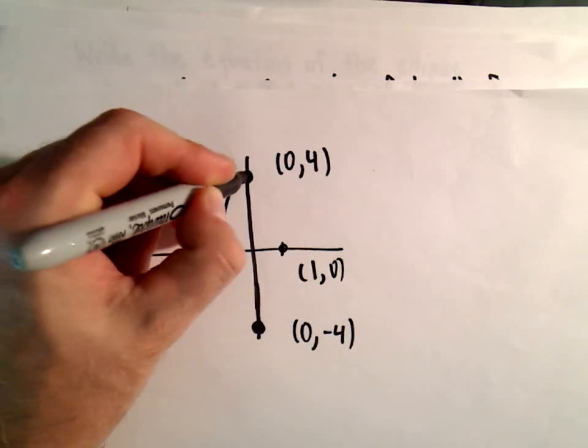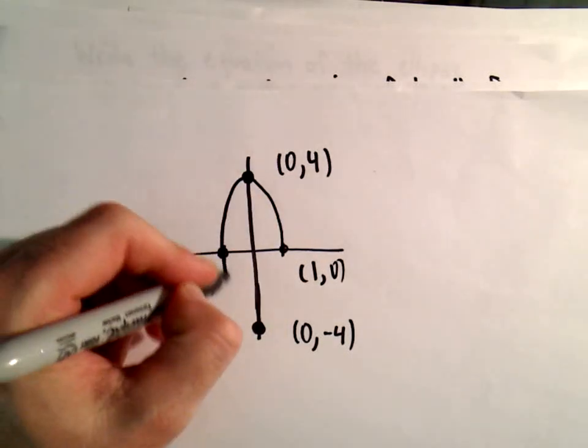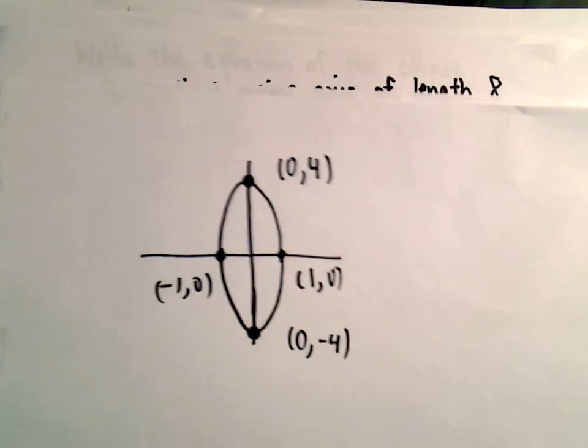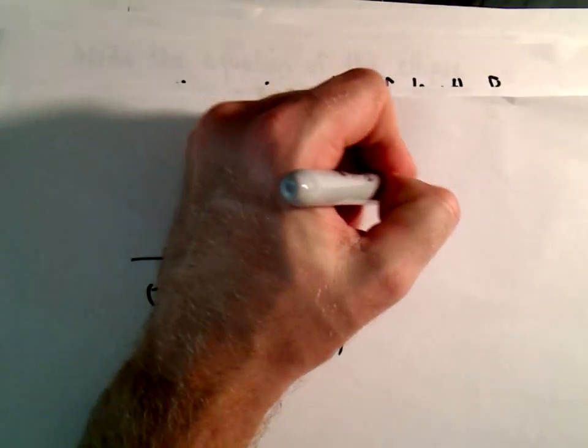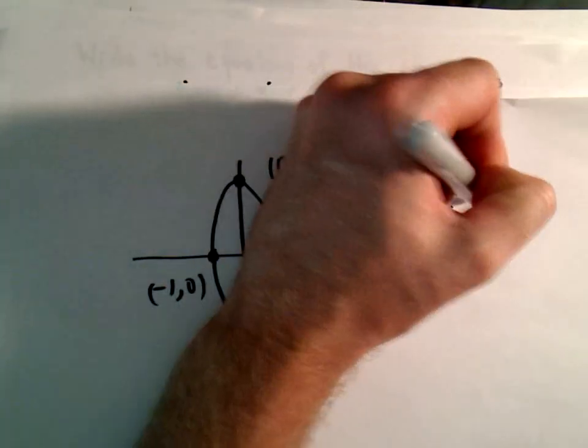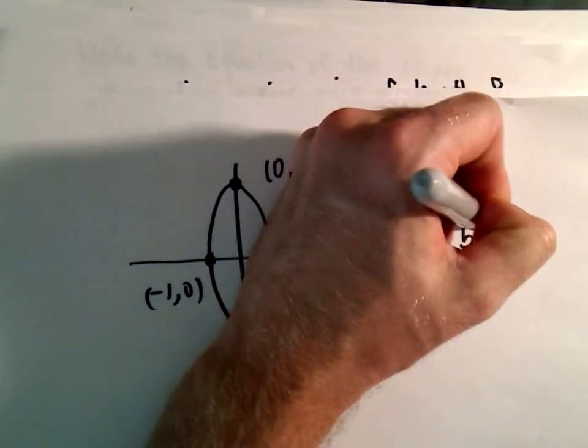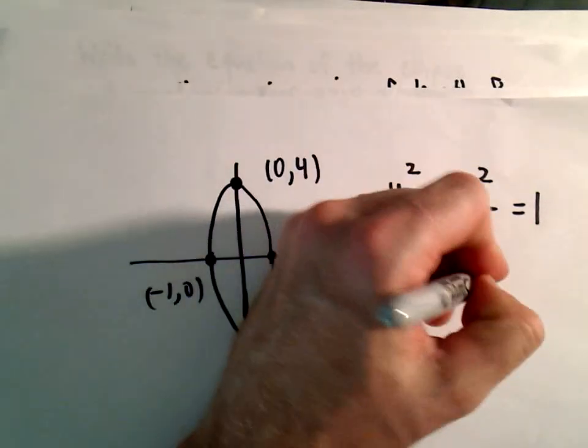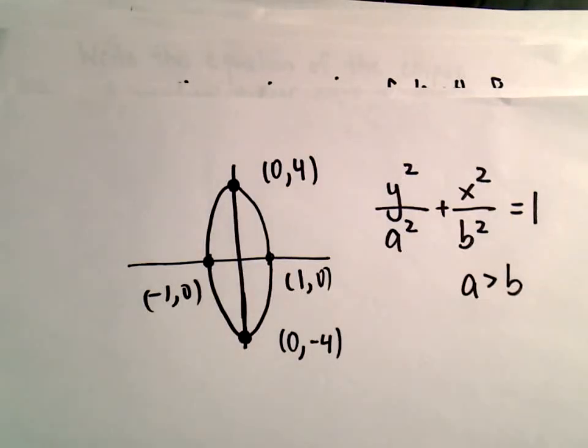Okay, so just to refresh you on some of the terminology there. So there's the sketch of our ellipse. And we know in this case it's going to be of the form y²/a² + x²/b² = 1. And in this case our a value is going to be larger than our b value.